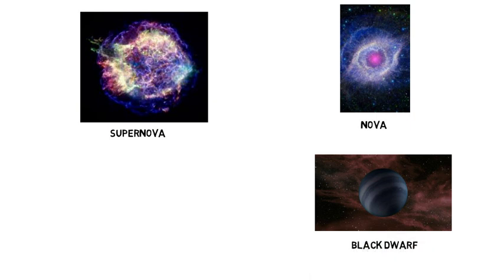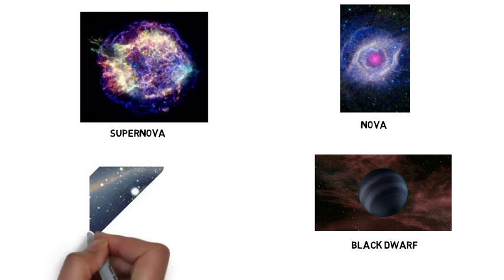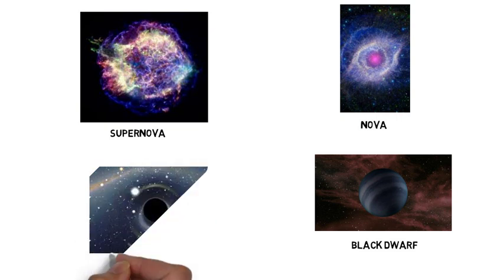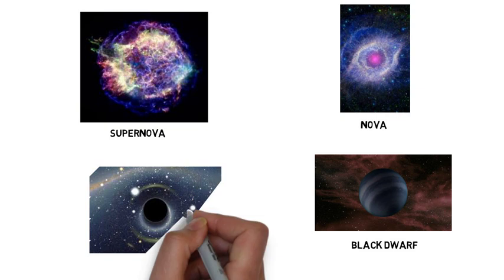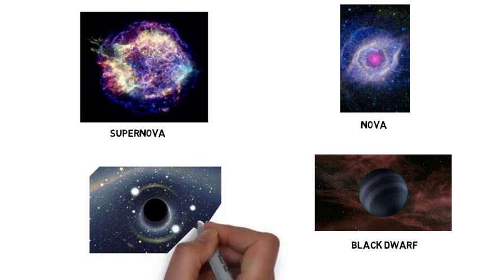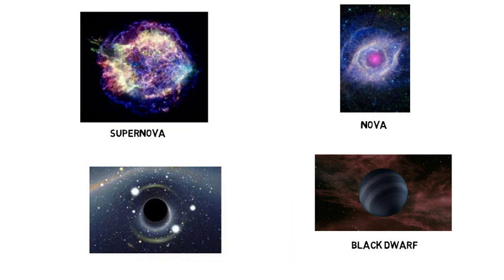The core of a white dwarf becomes very small, and its luminosity decreases and starts to cool off slowly because there is no more hydrogen or helium to produce energy. At a particular stage, the white dwarf will not shine anymore, and it will become a black dwarf.